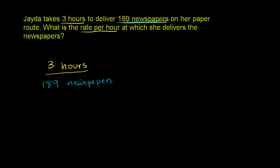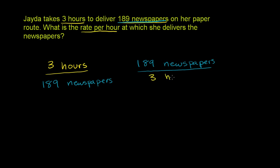So we can really just flip this rate right here. If we flip it, we would have 189 newspapers for every three hours, which is really the same information — we're just flipping what's in the numerator and what's in the denominator.